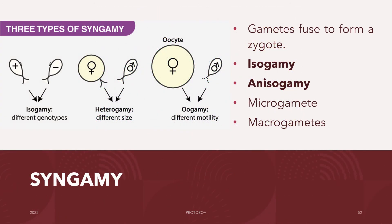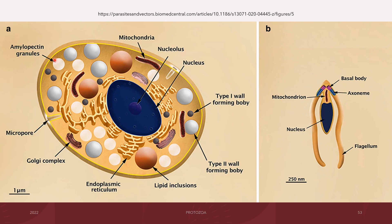Another type of sexual reproduction is syngamy — the fusion of gametes to form a zygote. There are many forms of syngamy, including isogamy, where similar gametes fuse, and anisogamy, where dissimilar gametes fuse. Anisogamy involves the fusion of a microgamete with a macrogamete, as illustrated in Toxoplasma gondii showing the macrogamete in transverse section and the microgamete in longitudinal section.